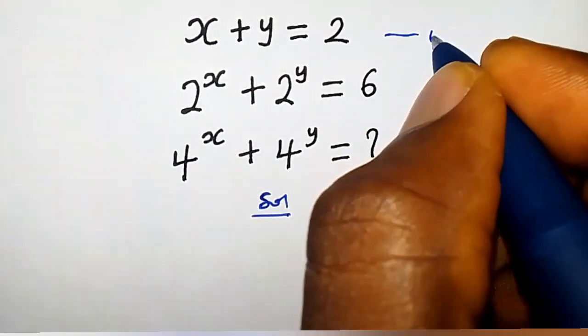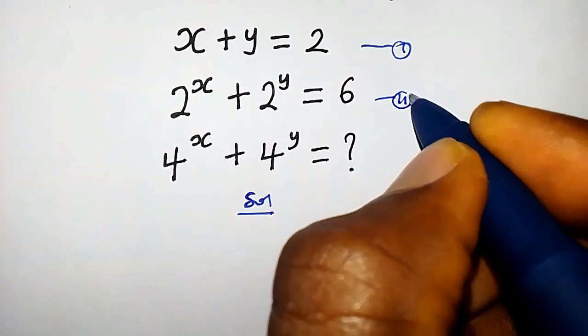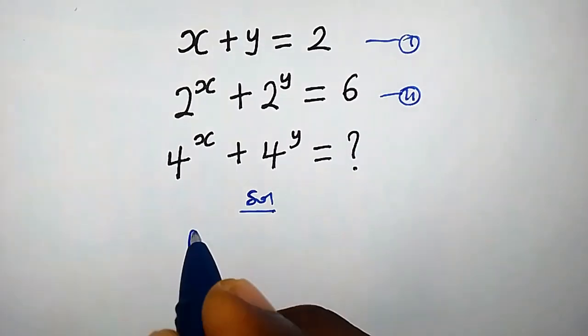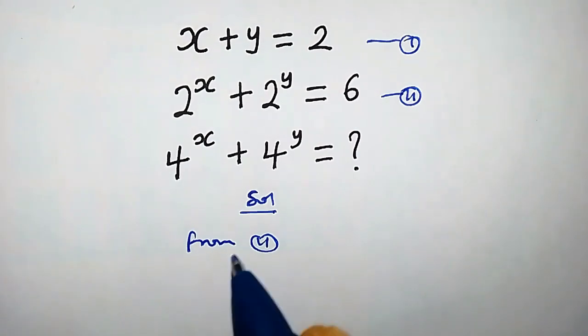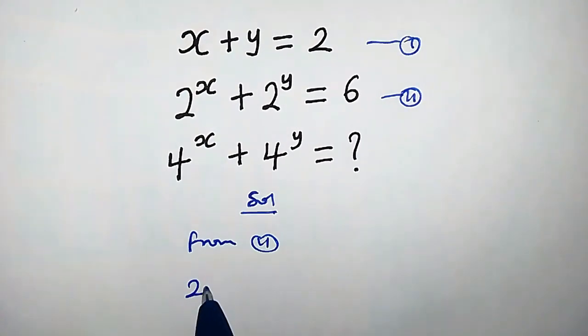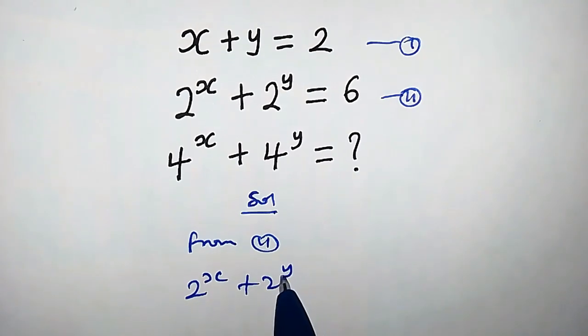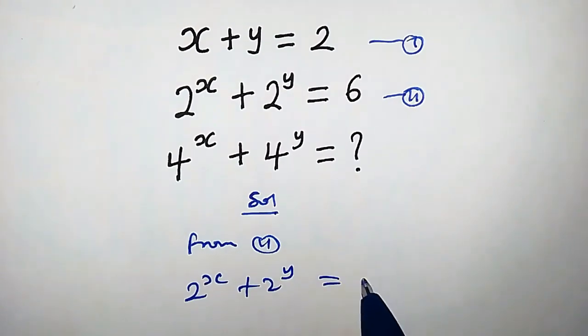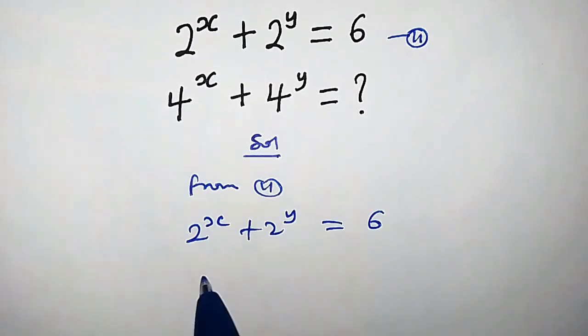Let's call this equation 1 and this equation 2. From equation 2, we have 2 to the power of x plus 2 to the power of y equals 6. Suppose we square both sides.